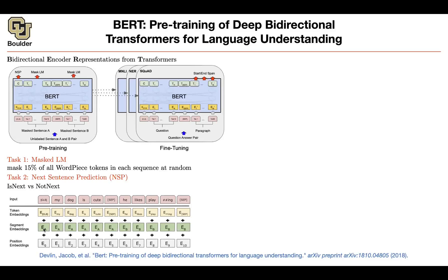Then you're going to have two segment embeddings — basically two vectors telling you whether you are in sentence A or sentence B. There is an embedding for sentence A and an embedding for sentence B, and then you just add them together. Because transformers process your entire sentence in parallel in one pass, you lose the position information — it's not like RNNs or LSTMs that process iteratively. So you add the order back with positional embeddings, one vector per position. These are learnable parameters.